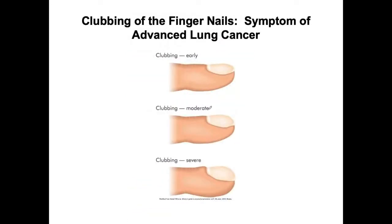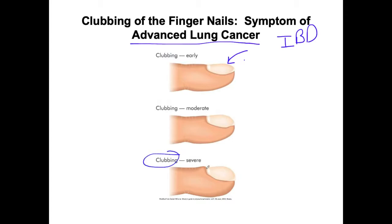Nails are really important in physical examination. When I see patients I shake their hand, feel the strength and temperature, then turn it over and look at the shape and color of the nails — it tells you a lot metabolically. In advanced lung cancer, COPD, and also irritable bowel disease, we see clubbing of the nails, where the nails become thick and round downward — very thick cuticles as well.